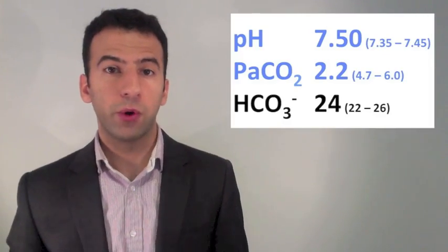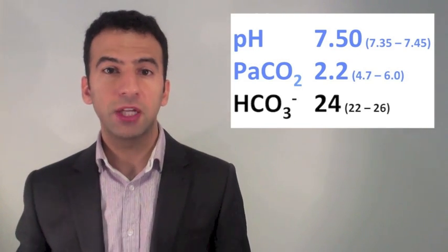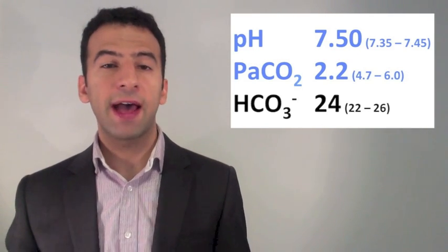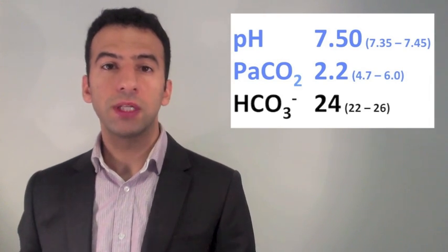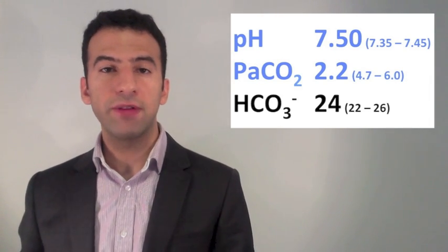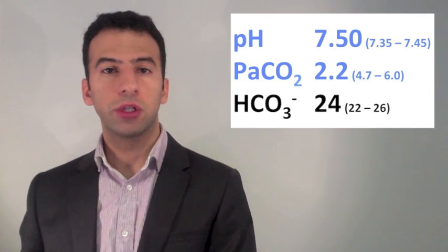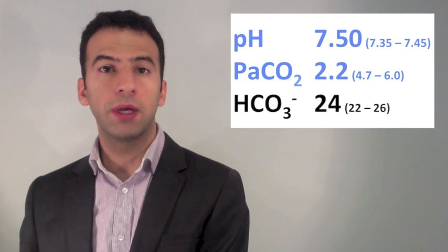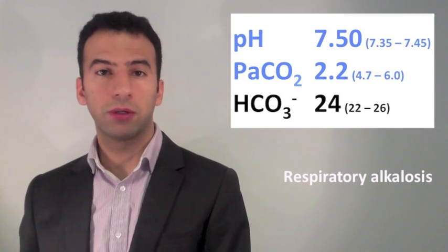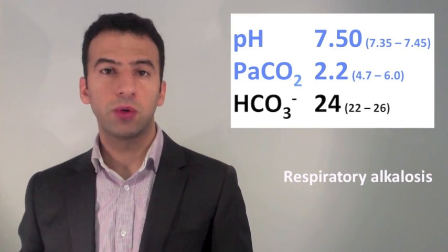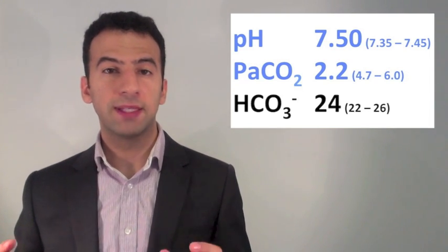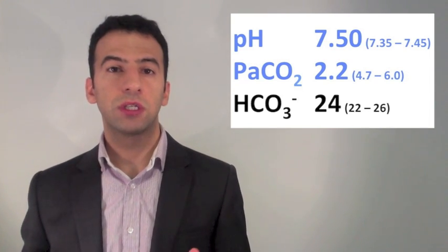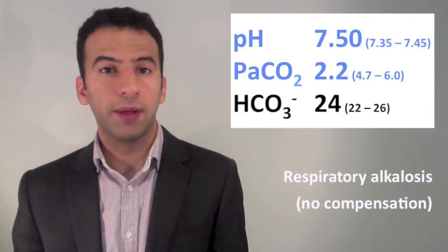Two more examples before we move the colour codes. The pH here is 7.5 — that is high, so alkalemia is present. The CO2 is low, so everything is moving in the same direction — this is a respiratory problem, a respiratory alkalosis. Step 3 shows us that the bicarbonate is normal, and that means there is no compensation. So this is an uncompensated respiratory alkalosis.